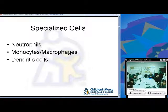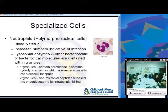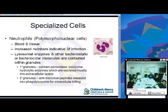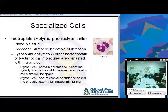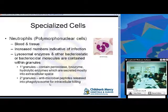The specialized cells are neutrophils, monocytes, macrophages, and dendritic cells — all of which can phagocytose and kill. Neutrophils, also known as polymorphonuclear cells, are present in blood and tissue. You'll see increased numbers during infection. They contain granules classified as primary or secondary. Primary granules contain peroxidase, lysozyme, and hydrolytic enzymes secreted into the extracellular space. Secondary granules contain antimicrobial peptides released into the phagolysosome for intracellular killing.